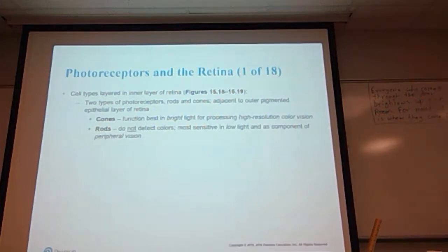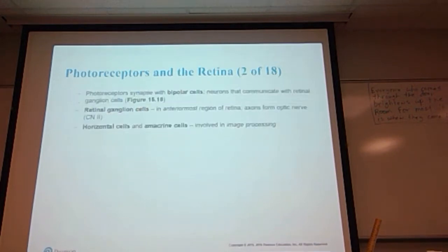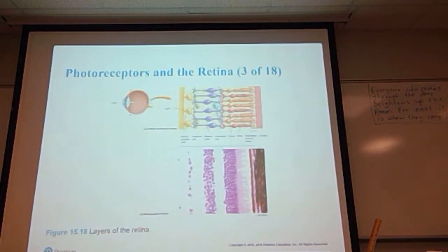There are two types of photoreceptors found within the inner layer of the retina: rods and cones. They are adjacent to the outer pigmented epithelial layer of the retina. Cones function best in high light, producing very high resolution color vision. Rods do not detect color — they are most sensitive in low light situations and serve as a component for peripheral vision. Photoreceptors synapse with bipolar cells, neurons that communicate with retinal ganglion cells, whose axons form the optic nerve, or cranial nerve number two. Horizontal cells and amacrine cells are also involved in image processing.